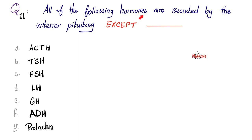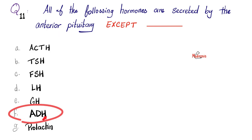Next: all of the following hormones are secreted by the anterior pituitary, except which one? The correct answer is ADH. ADH does not come from the anterior pituitary. ADH comes from the hypothalamus, which will then give it to the posterior pituitary. So ADH is the answer. Everything else is anterior pituitary.